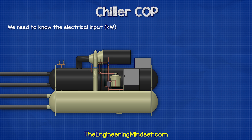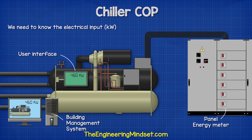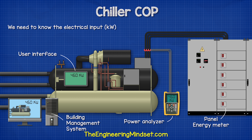The first part we need is the electricity in, and that's measured in kilowatts. This number is very easy to get hold of. You can find this information on a digital energy meter, which you will likely find on the electrical panel. Alternatively, it should be displayed on the user interface of the chiller or even on the building management system. Otherwise, you will need to connect a temporary energy meter. The electricity demand will vary depending on the cooling load — this is not a fixed value.